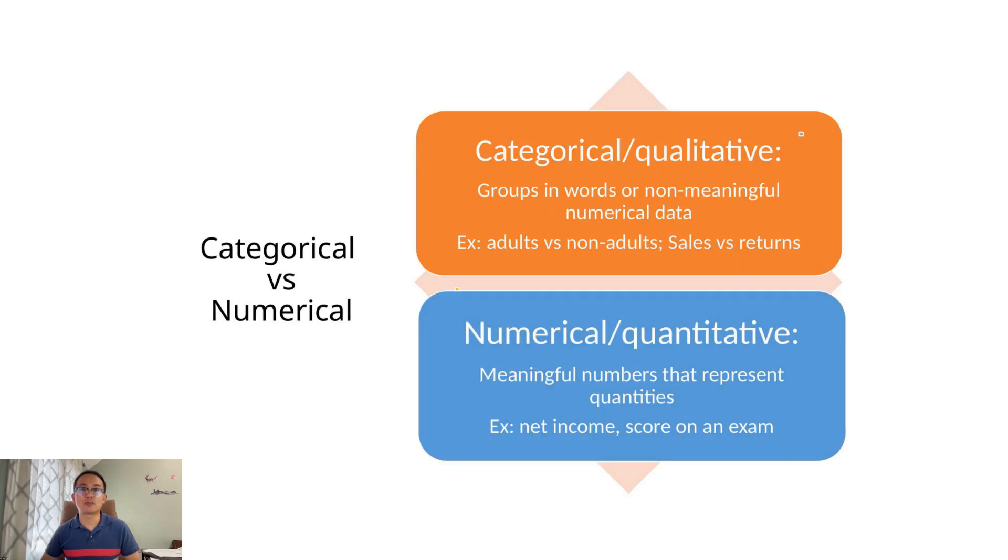Now let's look at two big types of structured data: categorical and numerical. Categorical data is used to group or classify things. It might use words or even numbers, but the numbers themselves don't mean anything mathematically. For instance, labeling people as adult or non-adult, or classifying inventory methods like FIFO or LIFO.